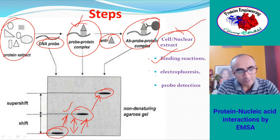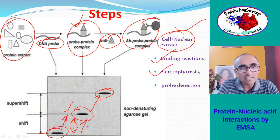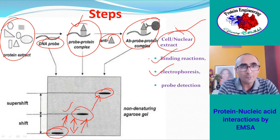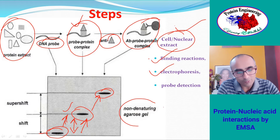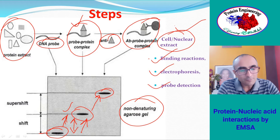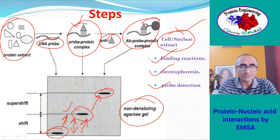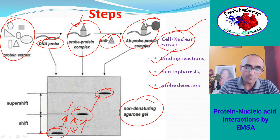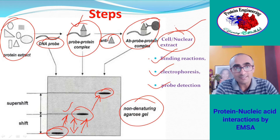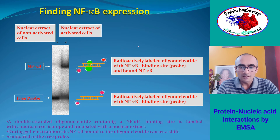So the four steps are: first, nuclear or protein extract is made; second, it is allowed to bind to the probe; third, electrophoresis in non-denaturing conditions is performed. It is important to use non-denaturing conditions because if you use denaturing conditions like in SDS-PAGE, the interaction between probe and protein will be disrupted and you will not see any shift. In the fourth step, the probe is detected by autoradiography, showing movement from low to high molecular weight when protein binds.